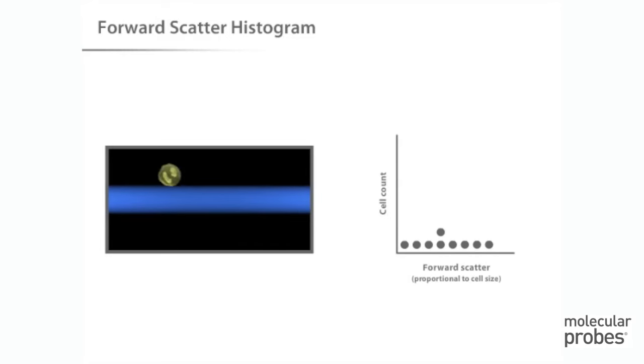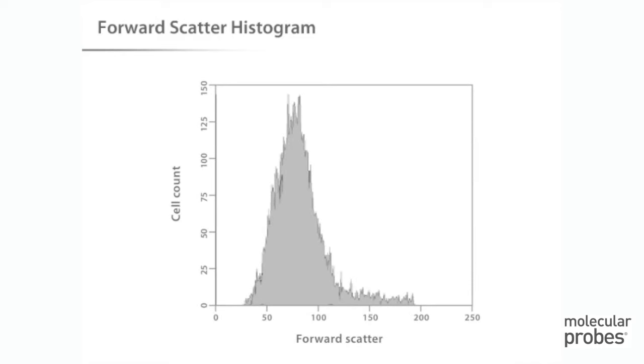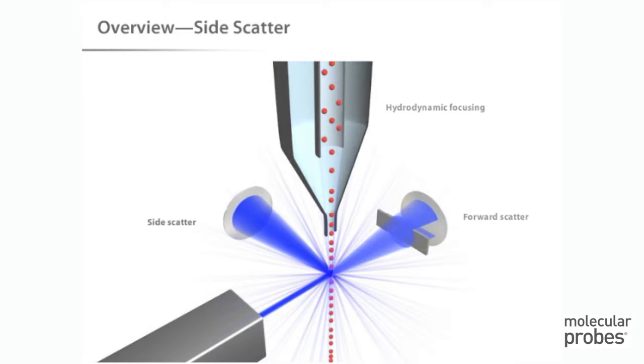A histogram of forward scatter data is a graphical representation of the size distribution within the population, but such a graph only presents one-dimensional data. Next, let's look at side scatter.